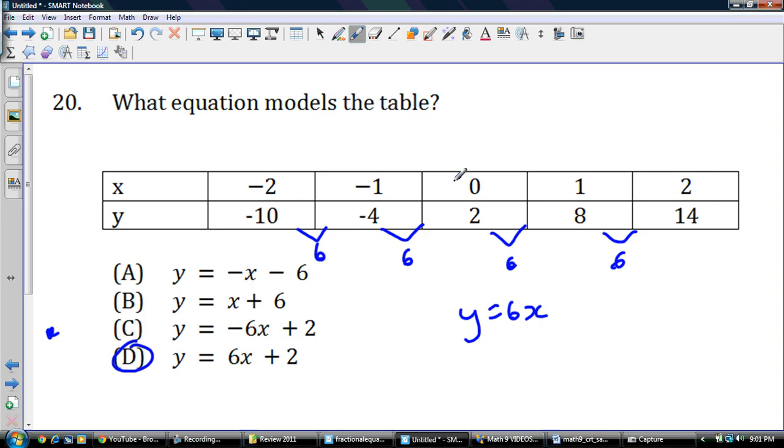But we'll find the plus 2 part as well. Now we have a special point here. We have 0, 2. Anytime you have 0 for x, you always know you're going to have to add that value there, right? Because 6 times 0, well that's just 0. So in order to get 2, you've got to add 2. So that gives me my equation, y equals 6x plus 2.